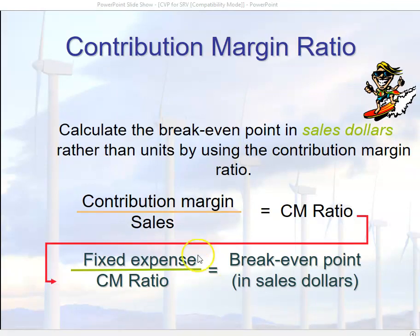We can also determine what is referred to as the contribution margin ratio, and this is particularly helpful when trying to determine our break-even point in sales dollars. What we've been looking at so far is how many surfboards we need to sell in units to break even, but we can use the contribution margin ratio approach to determine how much we need to sell in total dollars, which may be more useful to us.